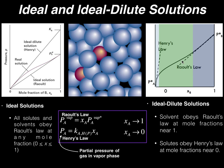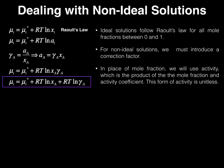I strongly recommend you go back and watch the previous video where we discussed this in more detail. At the end of that video I derived an expression: the chemical potential of our solution is equal to the chemical potential of the pure solvent plus RT times the natural log of the mole fraction of solvent A, plus RT times the natural log of the activity coefficient of solvent A.